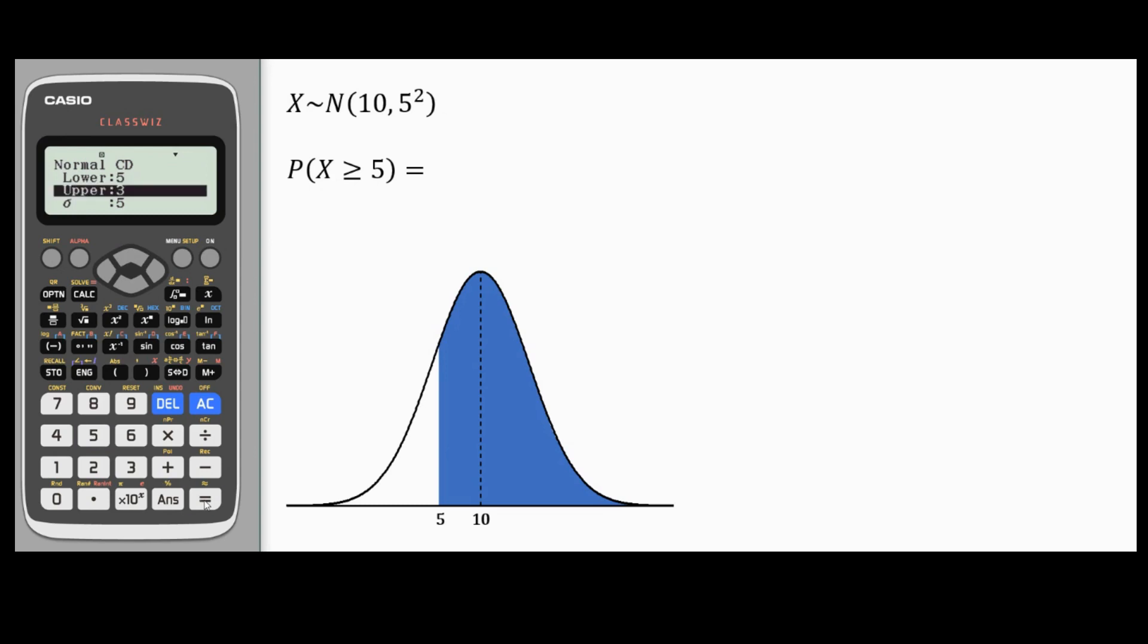Lower is equal to 5. And it goes on to infinity, so in place of upper, I have to make sure that I enter a positive very large number. I'm going to press a row of 9s here. Equals. And now I'm all set to get the answer, which is 0.8413 to 4 decimal places.